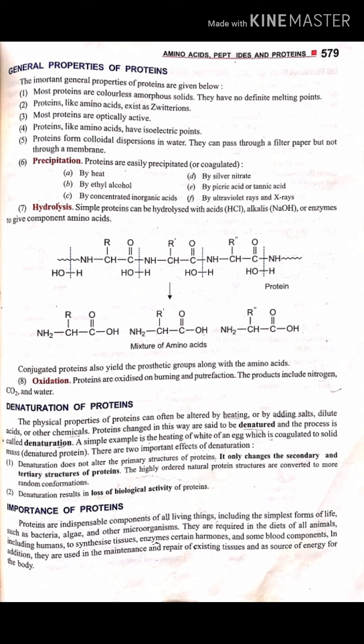We are now going to discuss protein denaturation. Proteins can be denatured by heat, ethyl alcohol, salts, and dilute acid or other chemicals. This process changes and disrupts the protein structure. A simple example: when we heat a protein, the protein becomes isolated and undergoes denaturation.